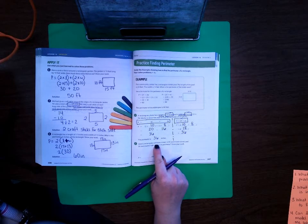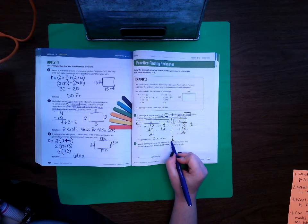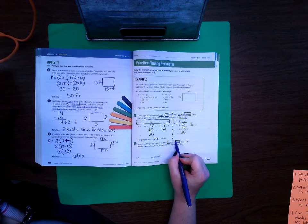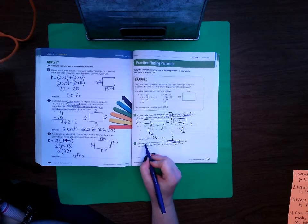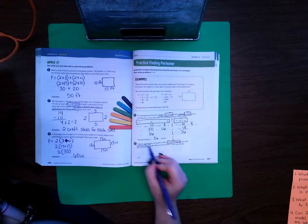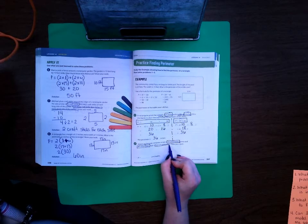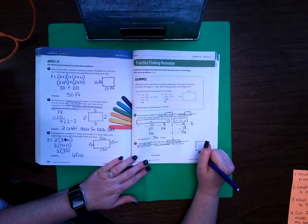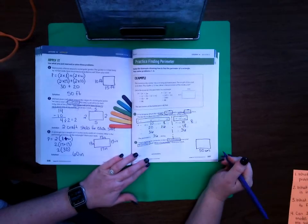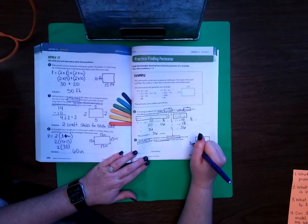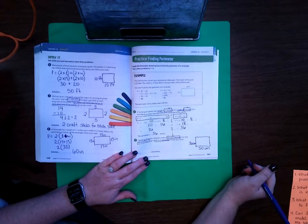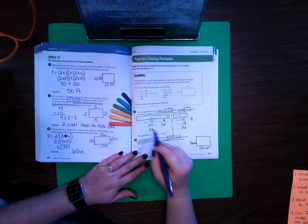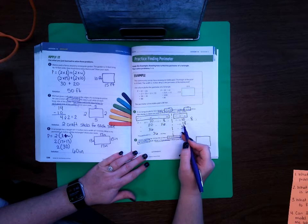Jason's rectangular computer screen is 50 centimeters across and 36 centimeters high. What is the perimeter? Okay, so we've got a computer screen. It's 50 centimeters across and 36 centimeters high. So I'm going to use whichever formula that I prefer to use. I kind of like this one over here. I feel like there's less steps.